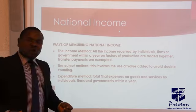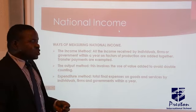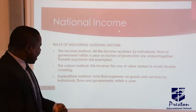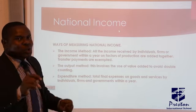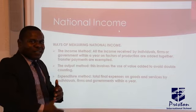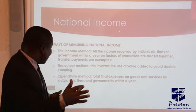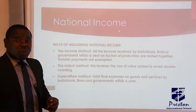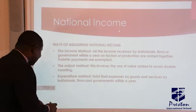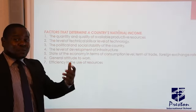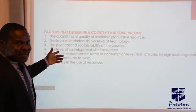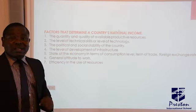The next one is the output method. Output method is talking about the value added in the production of goods and services. It is used to avoid double counting — that is why we call it value added. The expenditure method is talking about the expenses on goods and services. All these are different ways of calculating national income.